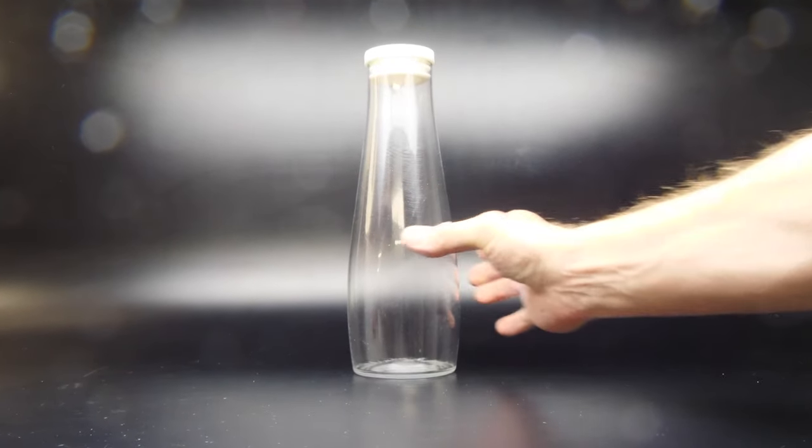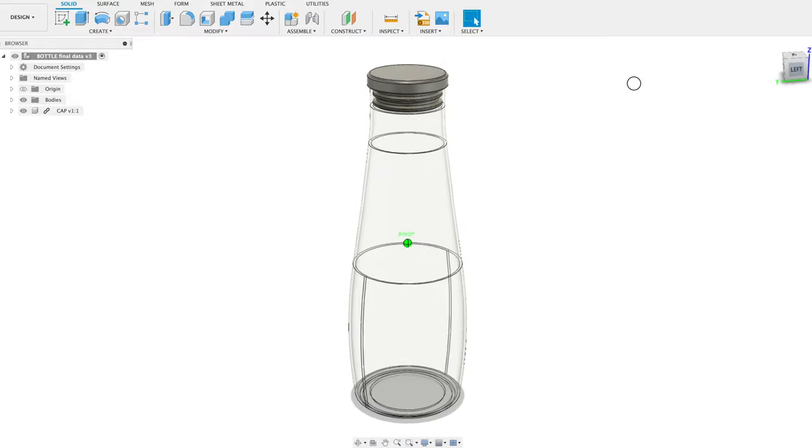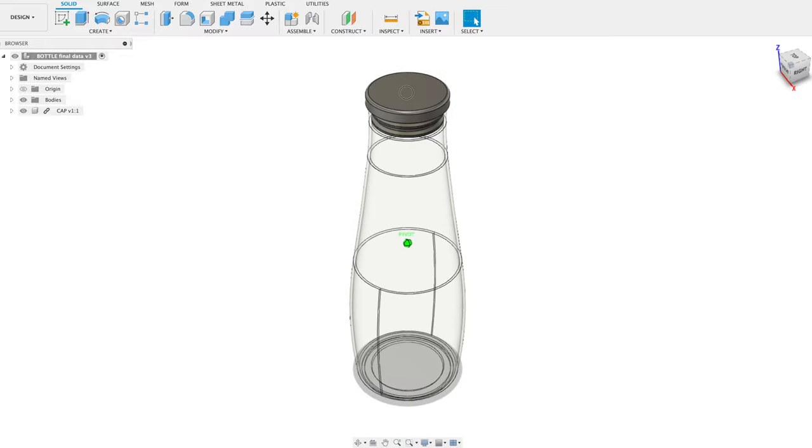I'm going to show you my prototyping process for making a clear bottle. We get some CAD data from a client, we SLA 3D print it, and then we clear coat it to get this beautiful bottle.